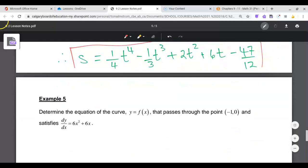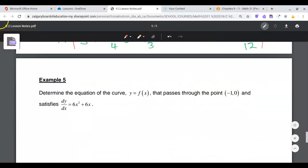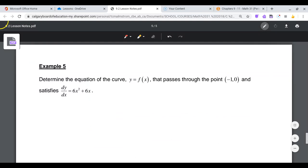Last question. Determine the equation of the curve y equals f of x that passes through the point negative 1, 0, and satisfies the differential equation dy/dx is equal to 6x squared plus 6x. Okay, so just remember, dy/dx is the same as saying y prime or f prime of x, given that they're asking me to find y equals f of x, the original function, is equal to 6x squared plus 6x.